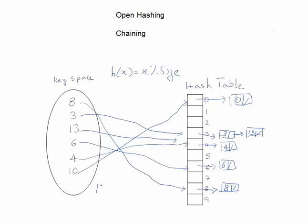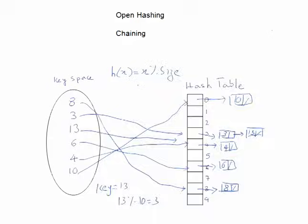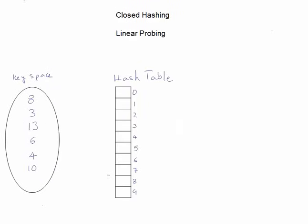When searching for a key element, say 13, we compute h(13) = 13 mod 10 = 3, go to index 3, and search for that element in the chain at that index. Since there may be more than one element, we have to search the entire linked list. The time complexity will not be O(1) — it will be more than O(1), but it will be better than O(log n).